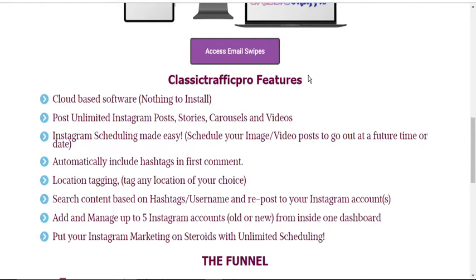The pricing: the front end goes for between $25 and $29, and with this you can use five Instagram accounts on the software. There is an upsell — OTO one — which offers you Classic Traffic Pro Agency and goes for $37. With this you can have up to 20 accounts linked to the software. In addition, you get training on how to create your own landing pages and how to use autoresponders to increase engagement and conversion for your products.